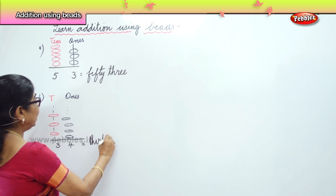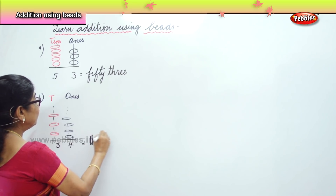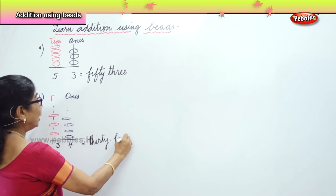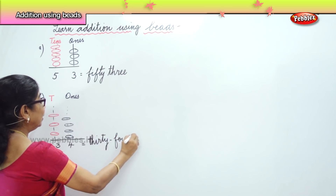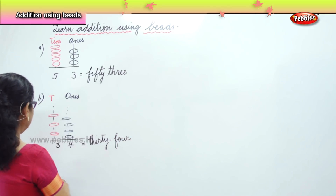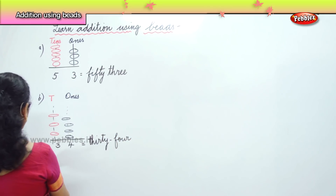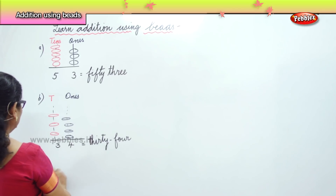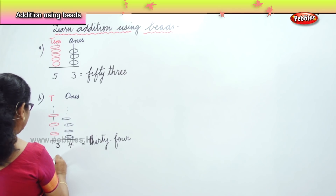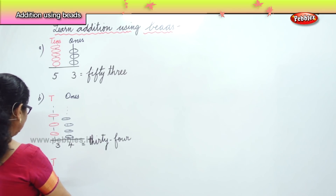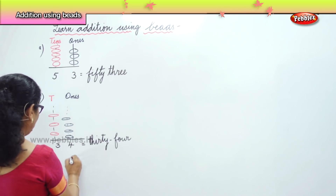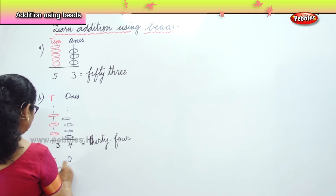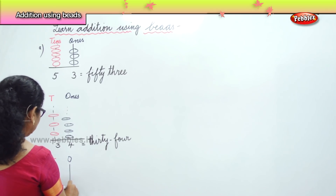34. So, we learnt to write the number. One more sum for you. You have your 10s, and you have your 1s, and then you have the number.